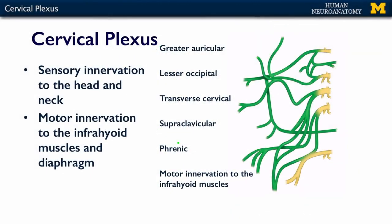The motor aspects of the cervical plexus are important in that the phrenic nerve is what innervates your diaphragm. There's a mnemonic I always use: 'C3-4-5 keeps the diaphragm alive.' Those are the cervical levels — 3, 4, and 5 — that contribute to the phrenic nerve, which innervates your diaphragm.